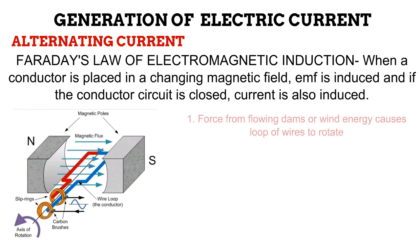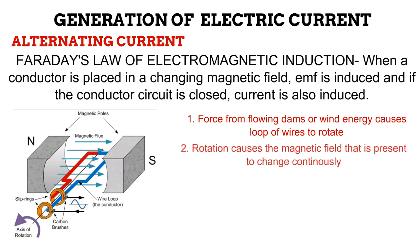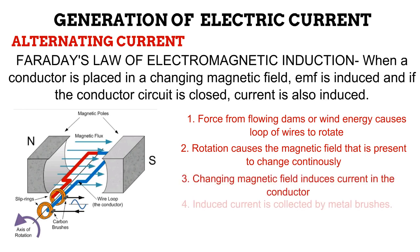First, natural sources of energy such as force from flowing water in a dam or wind energy, is used to make the loop of conductor wires rotate. Even though the magnetic poles are not moving, rotation of the conductor wire causes the magnetic field around the conductor to change, a changing magnetic field is produced. That takes us back to the law, because the conductor wires are now in a changing magnetic field, and this circuit is closed, EMF and current are induced.